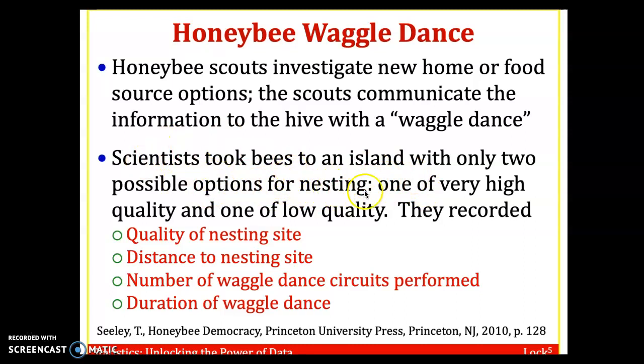So scientists took bees to an island that had only two possible options for nesting. This is an experiment the scientists set up. One of the options had a very high quality and one had low quality. Entomologists made sure that one nest was a very desirable location for bees to make their home and one was low quality.